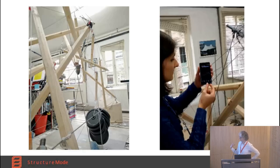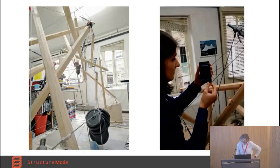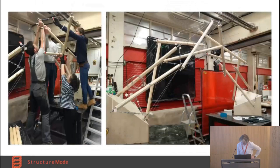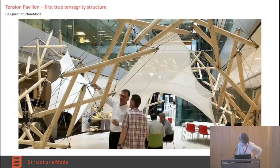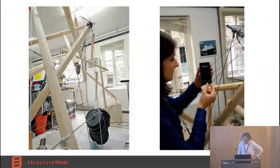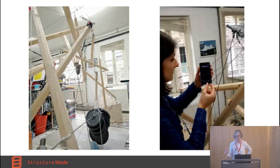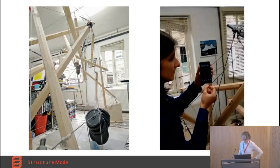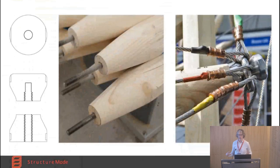We noticed that when we plucked the strings it became a bit like a guitar. Using an iPhone, we could determine the harmonic of that note for each string — specifically the first harmonic — which could then be used to determine the exact force in each cable and directly cross-check our analysis model, which proved to us that it was accurate.